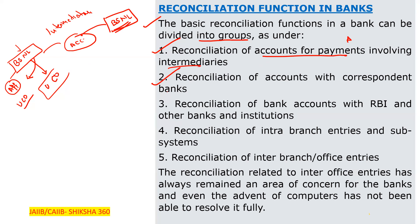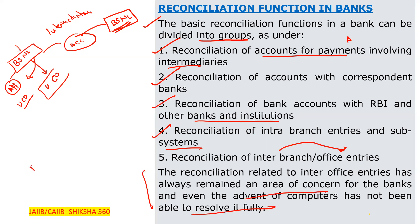The second reconciliation function is reconciliation of accounts with correspondent banks. The third is reconciliation of bank accounts with the RBI and other banks and institutions. Earlier, all banks had to maintain balances with the SBI for clearing functions, but now these things are outdated with the introduction of CTS. Banks also have to maintain ratios like the CRR ratio. There is also reconciliation of intra-branch entries and subsystems, and reconciliation of inter-branch or inter-office entries.